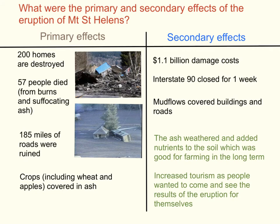In the context of Mount St Helens, we need to consider some facts and figures to support the primary and secondary effects of this eruption. The primary effects include: 200 homes were destroyed; 57 people died from burns and suffocating ash — a low number indicating some management was in place; 185 miles of roads were ruined; and crops including wheat and apples were covered in ash and destroyed.